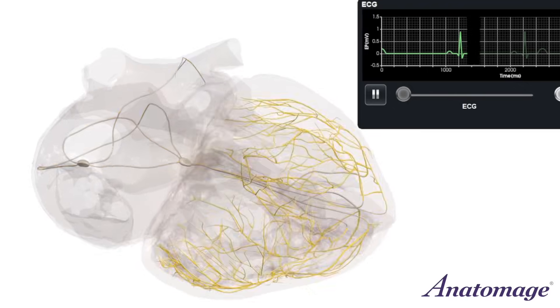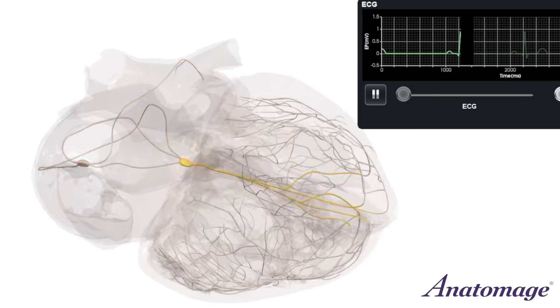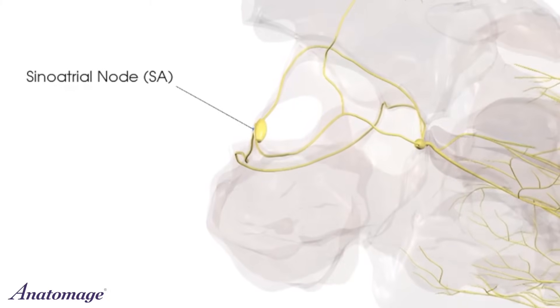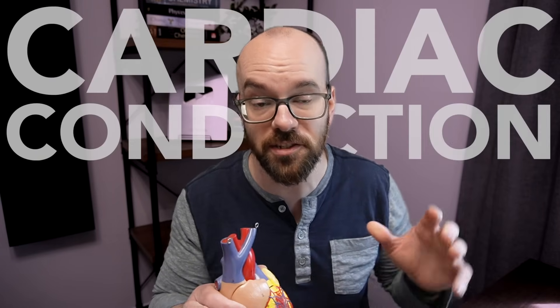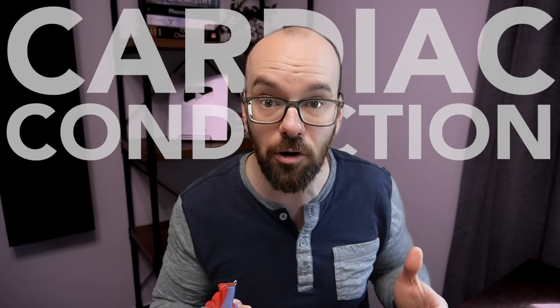Your heart has beat continuously for your entire life, from that very first heartbeat back when you were a fetus developing in the uterus until this very day. That constant rhythm that keeps the blood pumping through your arteries is thanks to a small mass of cardiac tissue called the sinoatrial node, along with a complex cardiac conduction system that runs through your heart coordinating your heartbeat.